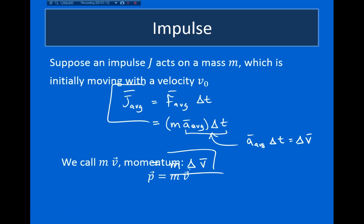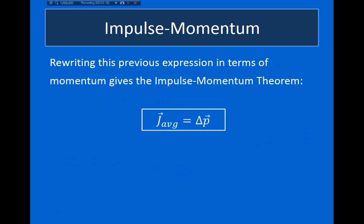We call mass times velocity the momentum. So what this means is that the average impulse that is exerted on an object is equal to the change in momentum, because momentum is mass times velocity.